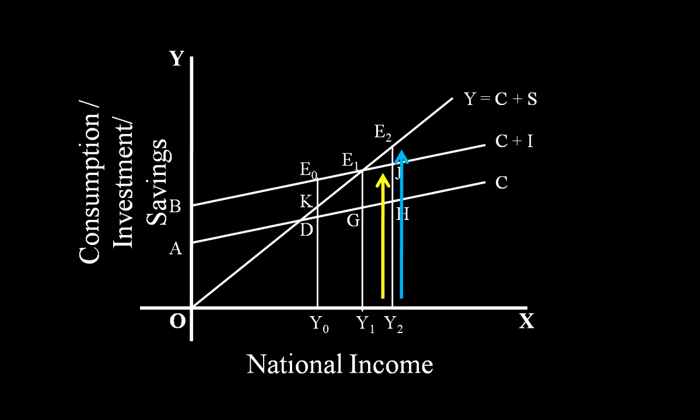As aggregate supply exceeds aggregate demand, there emerges an undesired increase in inventories. Business firms, attempting to eliminate unwanted inventory accumulation, reduce investment. This leads to a fall in output, employment, and income. At last, the equilibrium income level Y1 is restored.